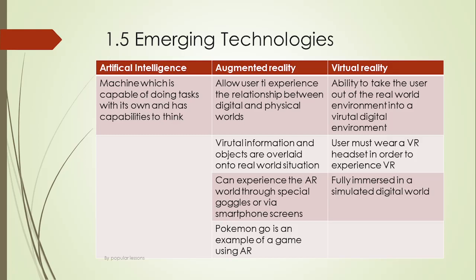One of the famous emerging technologies is Artificial Intelligence. It is a machine which is capable of doing things on its own and has capabilities to think. Simply put, AI is trying to replicate how humans think and how they get emotional — that is the target of Artificial Intelligence.